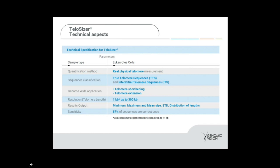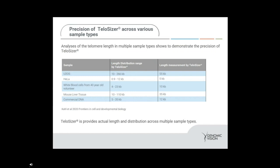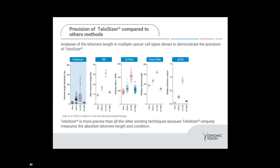As part of our validation of Telosizer, we looked across multiple sample types: U2OS cells, HeLa cells, white blood cells, mouse liver tissue, and commercial DNA. We were able to get both the distribution range and the individual telomere length. That's different from what you get with other methods — with other methods you get the mean telomere length such as in TRF, arbitrary units such as in QFISH, or relative telomere length such as in FlowFISH or real-time PCR. Whereas with Telosizer, Genomic Vision provides the telomere length distribution and the individual telomere lengths.